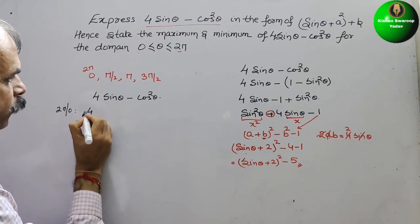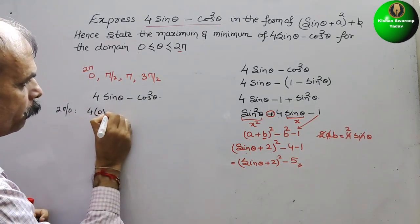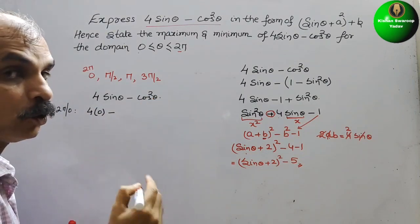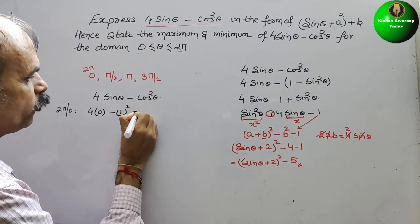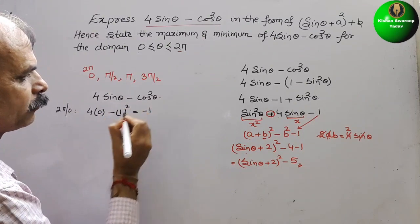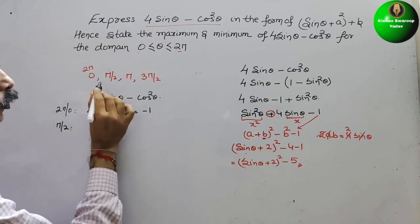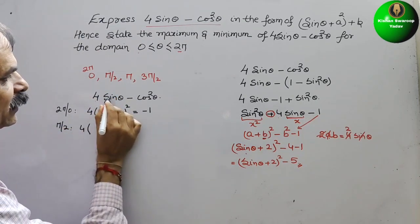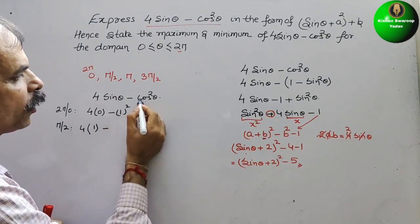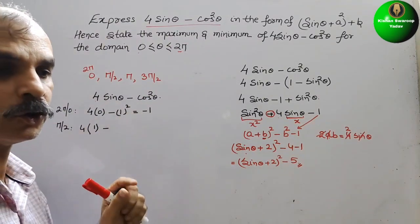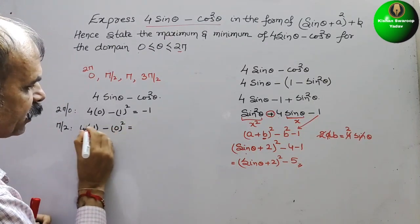First, at theta equals 0: 4 sin 0 is 0, and cos 0 is 1, so cos square 0 is 1. We get 0 minus 1, which equals minus 1. Next, at theta equals pi by 2: 4 sin(pi by 2) is 4 times 1 equals 4, and cos(pi by 2) is 0, so 0 squared is 0. We get 4 minus 0, which equals 4.